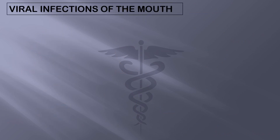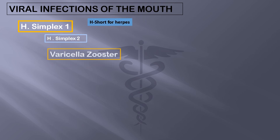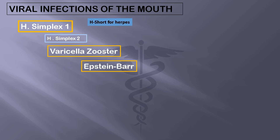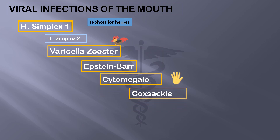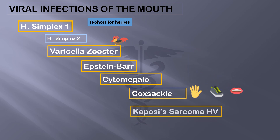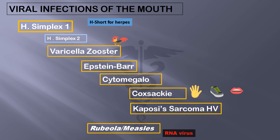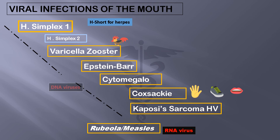Here is a list of viral infections commonly affecting the oral cavity: herpes simplex type 1 and 2, varicella zoster or the chicken pox virus, Epstein-Barr virus, cytomegalovirus, coxsackie also known as hand, foot and mouth disease virus, Kaposi sarcoma virus, and rubeola or measles virus. Out of these, rubeola is an RNA virus and the rest are DNA viruses. The first five belong to the herpes group of viruses.